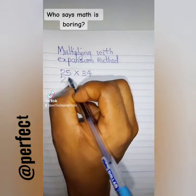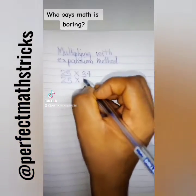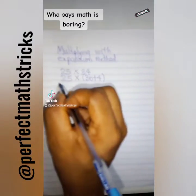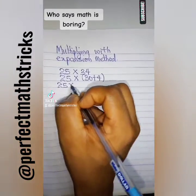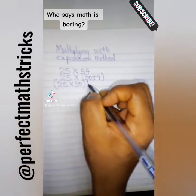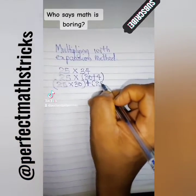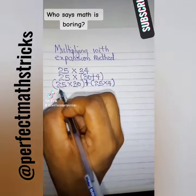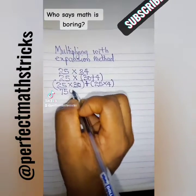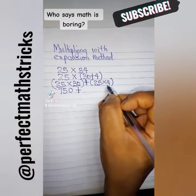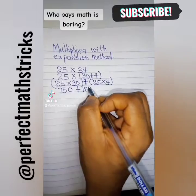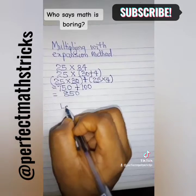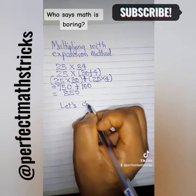We're multiplying using the expansion method. We're expanding 34, which gives 30 plus 4, so 25 times 30 plus 25 times 4. 25 times 3 gives 75 — just include your zero — this is a very easy way of multiplying using multiples of 10. Then 750 plus 100 gives 850.